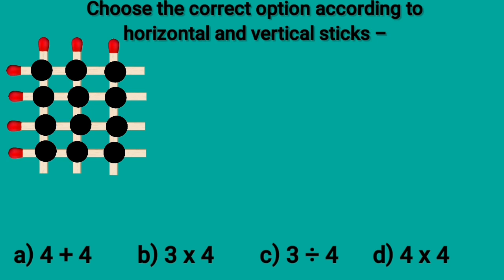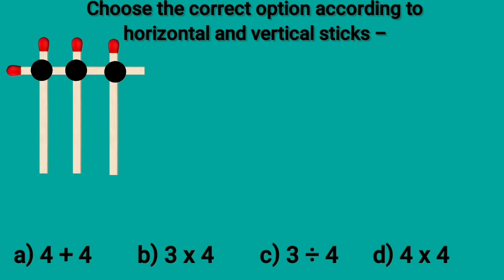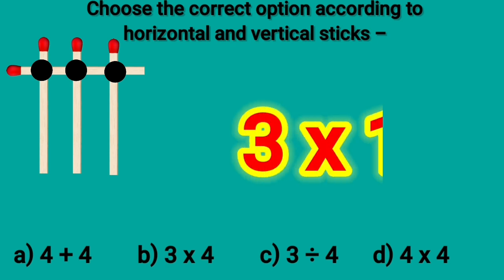Kids, choose the correct option according to horizontal and vertical sticks. Kids, when 3 vertical sticks are cut by 1 horizontal stick, it is written as 3 multiplied by 1. It means 3 multiplied by 1.